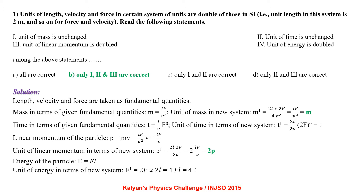Linear momentum equals LF by V. The unit of linear momentum in the new system equals 2L times 2F divided by 2V, which is 2 times LF by V, that is 2 times momentum. Energy E equals F times L, which is also equal to work done. The unit of energy in the new system U dash equals 2F times 2L, that is 4 times FL, so it is 4 times E.